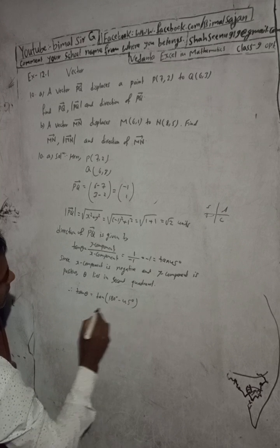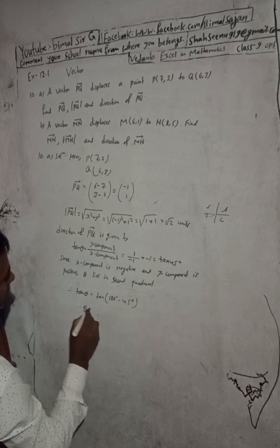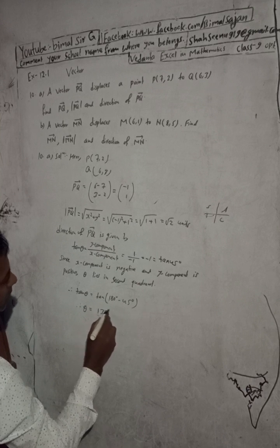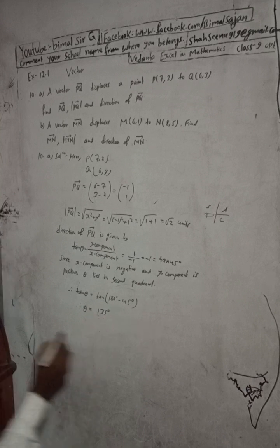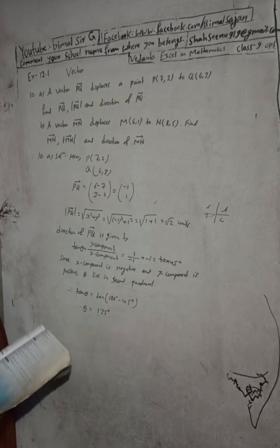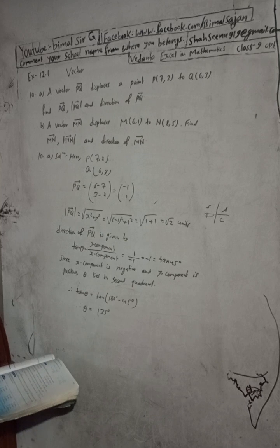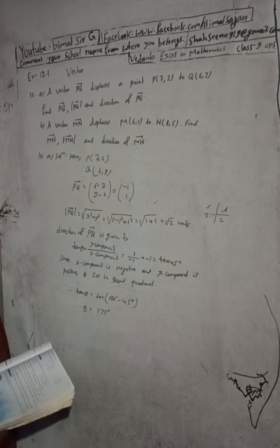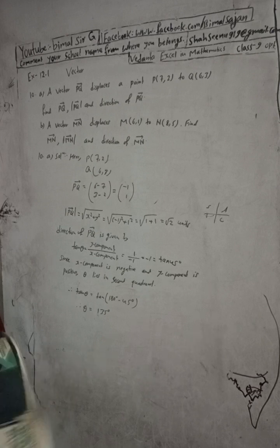Looking at this, the reference angle is 45 degrees but since x is negative and y is positive it is in the second quadrant, so minus 45 degrees. Therefore theta equals 180 minus 45, which equals 135 degrees. The answer in the book confirms: PQ vector equals (-1, 1), magnitude equals root 2, and direction is 135 degrees. That is the correct answer.